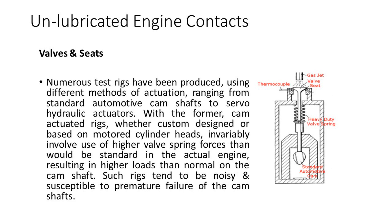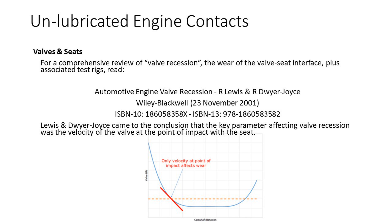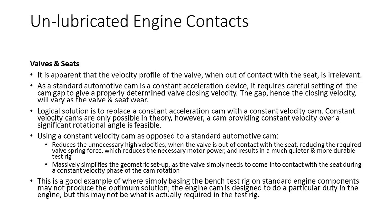Not all components in engines are lubricated. Unlubricated contacts include valves and seats with impact sliding, valves and seats with valve head flexing, and turbocharger guide vanes under conditions of severe oxidative wear. For a comprehensive review of valve recession — the wear of the valve seat interface plus associated test rigs — the relevant literature should be consulted. Numerous different test rigs have been produced using a range of different methods of actuation, ranging from standard automotive camshafts to servo-hydraulic actuators. Cam-actuated rigs, whether custom designed or based on motored cylinder heads, almost invariably involve higher valve spring forces than standard in an actual engine, resulting in a higher load on the camshaft. Such rigs tend to be very noisy and susceptible to premature failure of the camshafts.